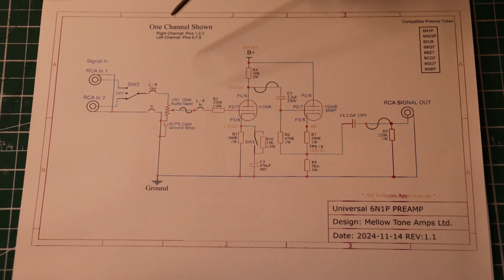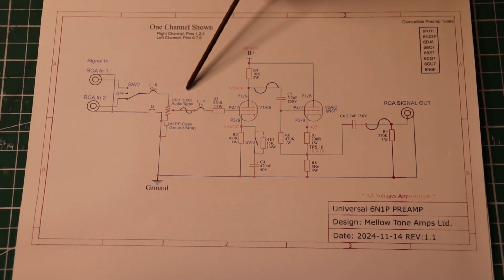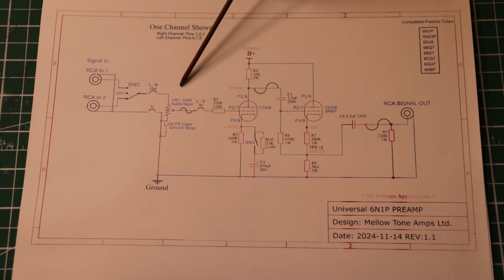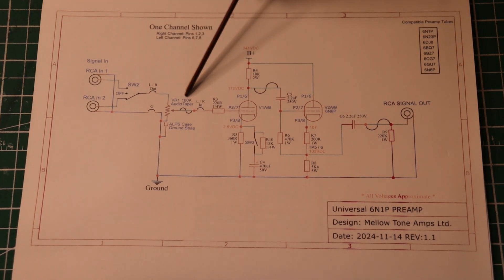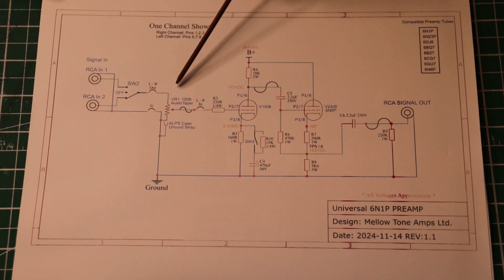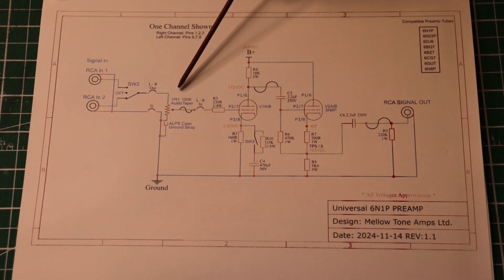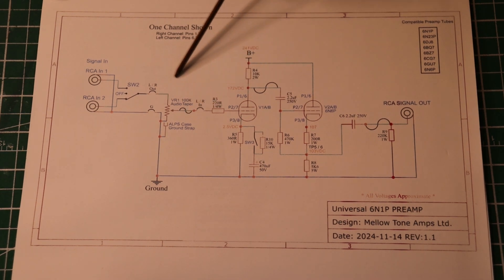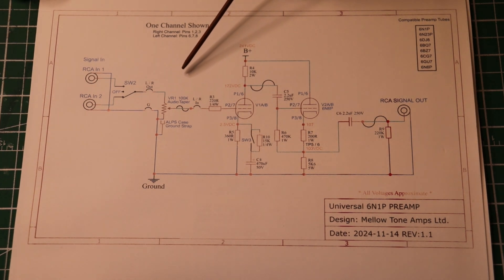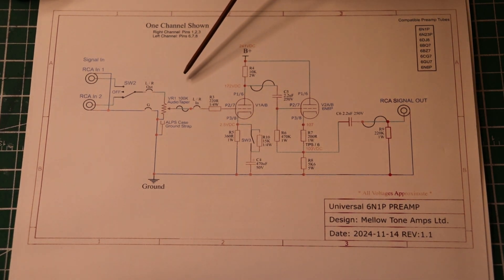We land on the ALPS pot, this is a 100k dual section pot, so it's a stereo pot. The 100k pot actually sets the input impedance. It will vary slightly depending on the position of the volume, but essentially you end up with 100k basically as a nominal input impedance. The lowest it goes to is something like 96k.